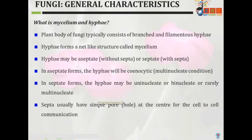In septate forms, hypha may be uninucleated, binucleated, or rarely multi-nucleated. Septate and aseptate forms are differentiated on the basis of their nucleated conditions. Septa usually have a simple pore at the center for cell-to-cell communication — septa is the structure responsible for cell-to-cell communication.